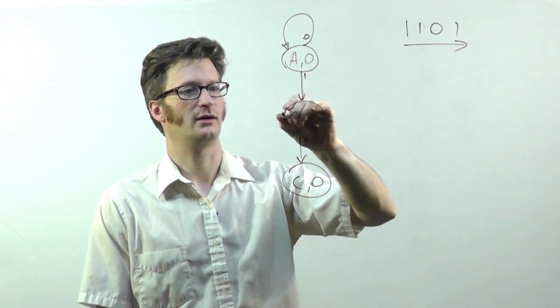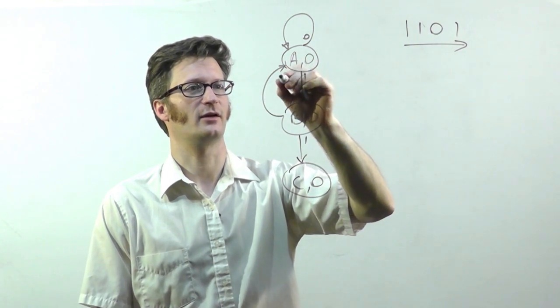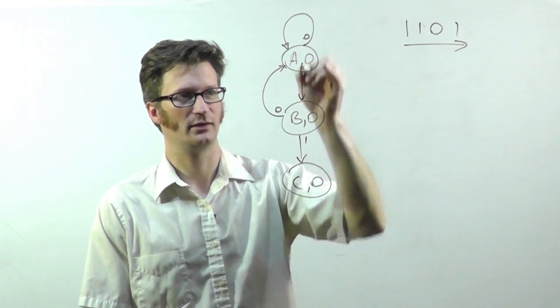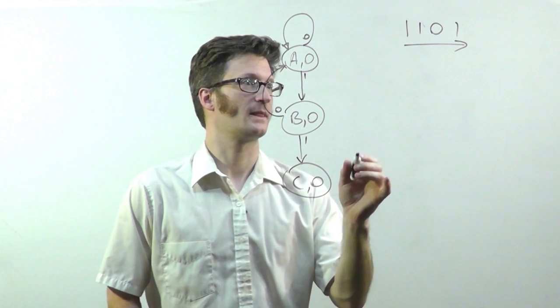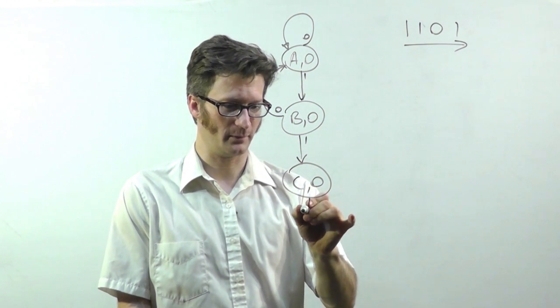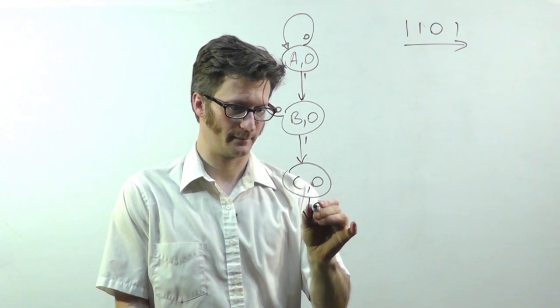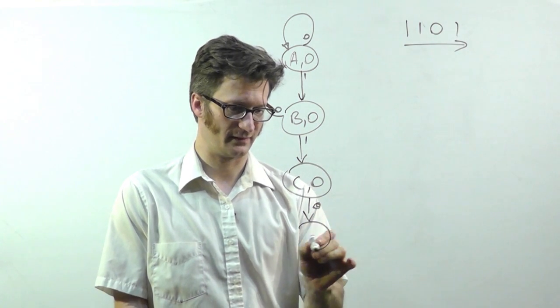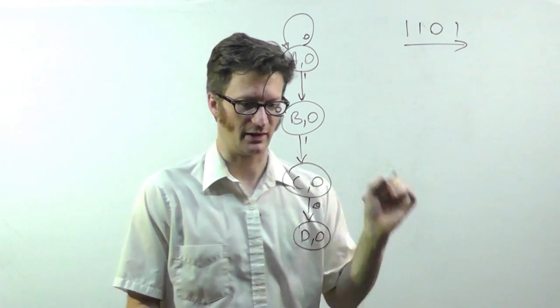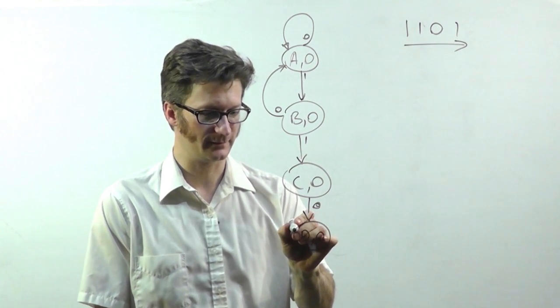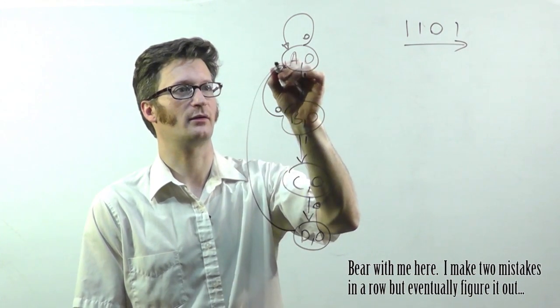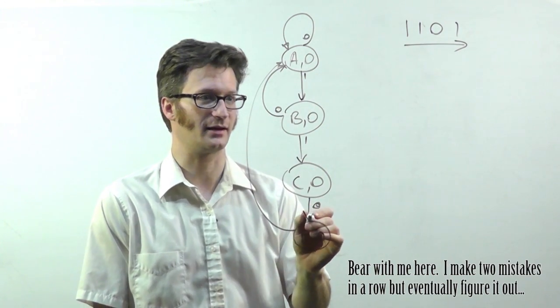So in this case, if we detected a 0, we need to go back to the beginning. Now we're looking for a 0 to take us to state D, which will output a 0. If we detect a 1, well, that's not what we're looking for, so we go back to the beginning.